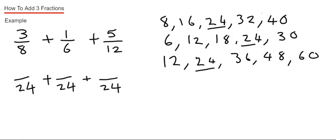We just need to work out the top numbers now of our equivalent fractions. How many times did 8 go into 24? It went three times, so we need to times this top number by three. Three times three is nine.